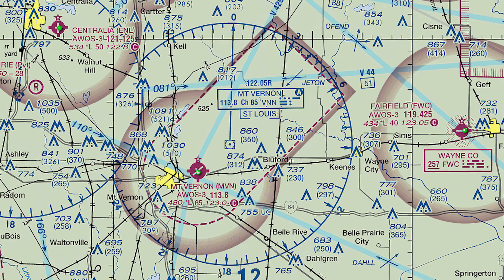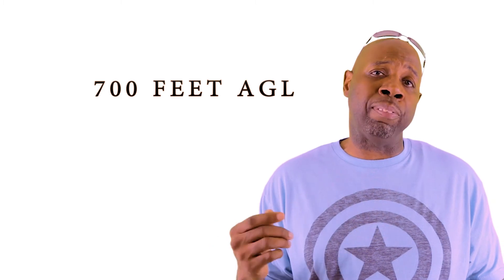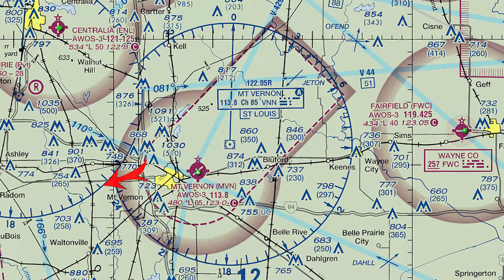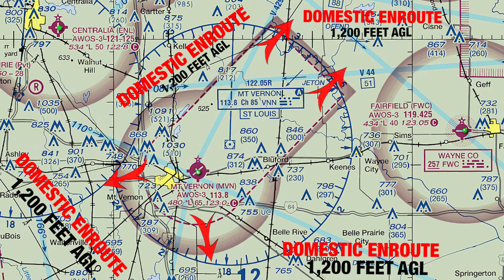Now let's take a quick look at a sectional chart for Mount Vernon Airport in Mount Vernon, Illinois. As you see, there's a faded magenta circle and an attached section extended to the northeast surrounding Mount Vernon Airport. This is called a Class E transition area. It starts at 700 feet AGL, or above ground level, and continues up to Class A airspace. Anywhere outside the faded magenta area is called the domestic en route, and Class E airspace starts at 1200 feet AGL unless designated as another type of airspace, and also continues up to Class A airspace.